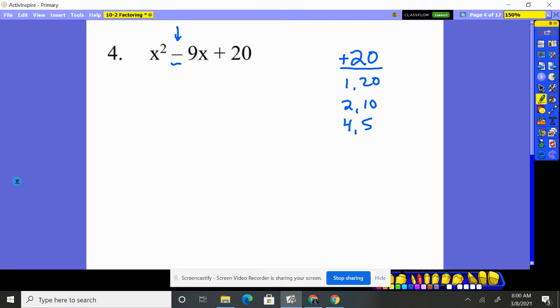this right here would have to be a positive. It ends up being a negative 9. So that tells me right away that we're dealing with both pieces being negative. A negative 1 times negative 20 is positive 20. Negative 2 times negative 10 is positive 20. Those are all going to give us positive 20s.